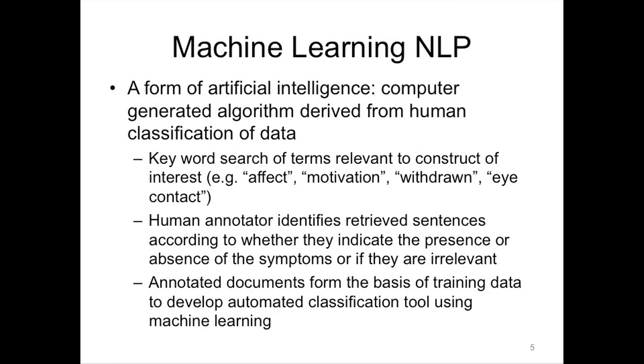You can extend this process by using a technique called machine learning. In essence, machine learning is the process by which you develop a computer algorithm based on data which is classified by a human. In the case of NLP there are three steps. The first step is to identify relevant documents using keywords — words like affect, motivation and so forth. A human annotator then reads these extracted documents and classifies them according to the presence or absence of a symptom or if it's irrelevant. These annotated documents form the basis of training data for a machine learning algorithm to develop an automated tool to extract these symptoms.